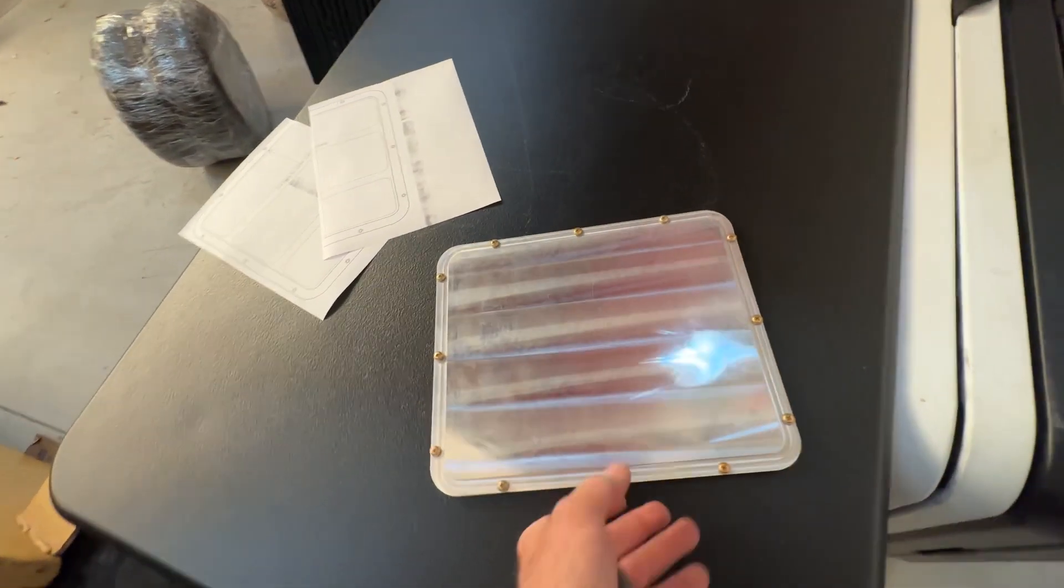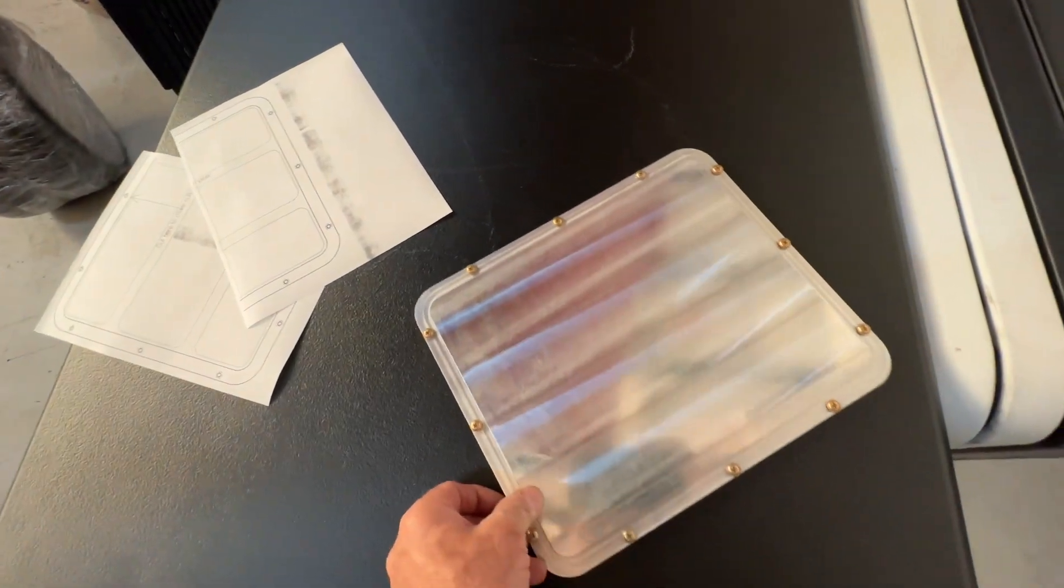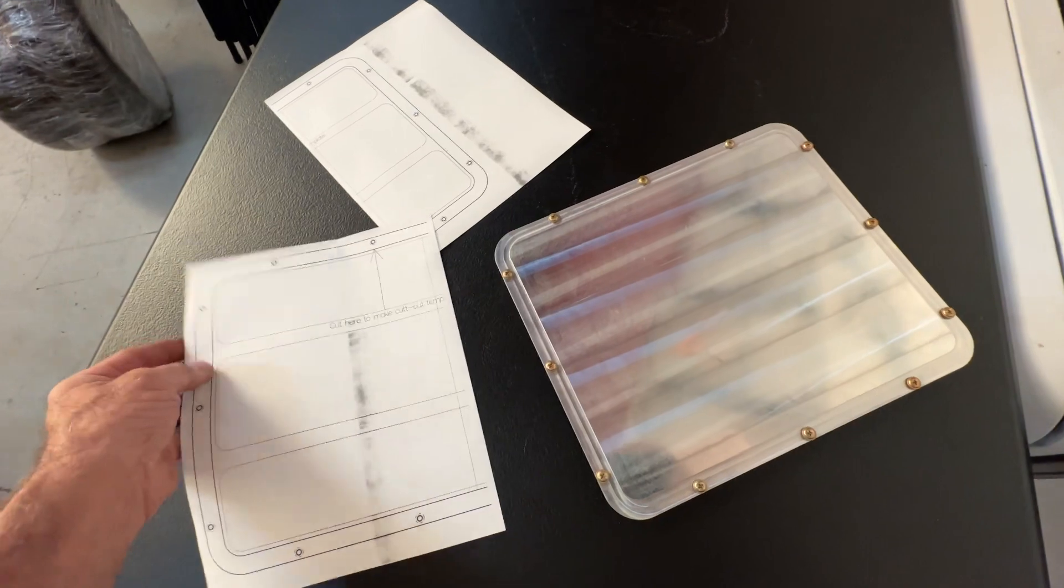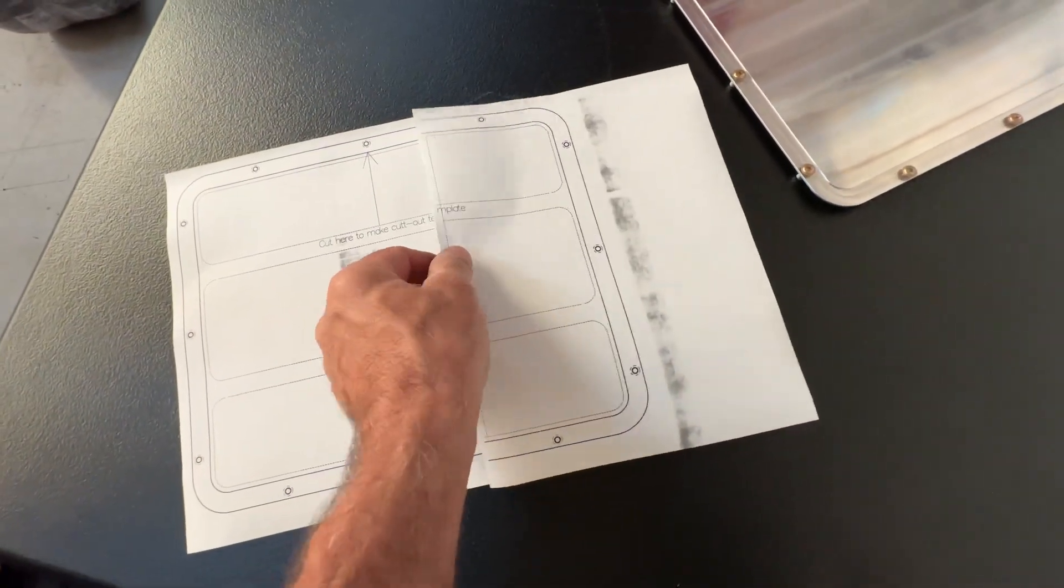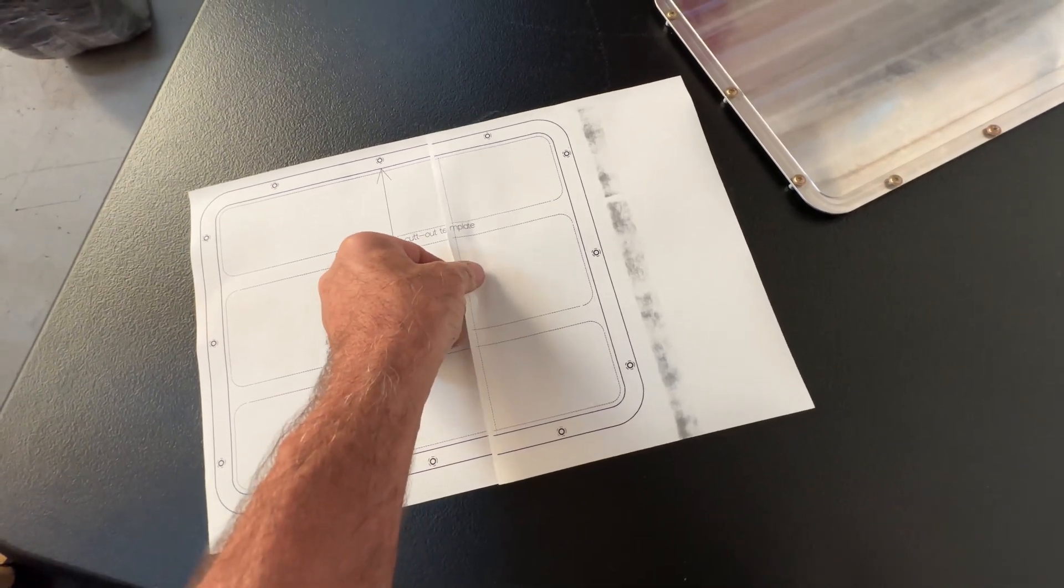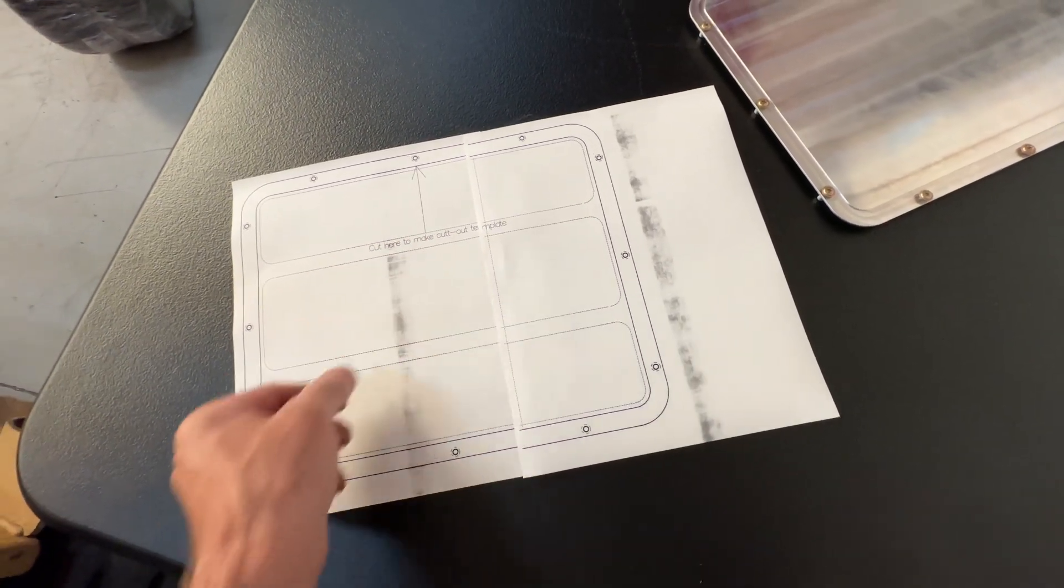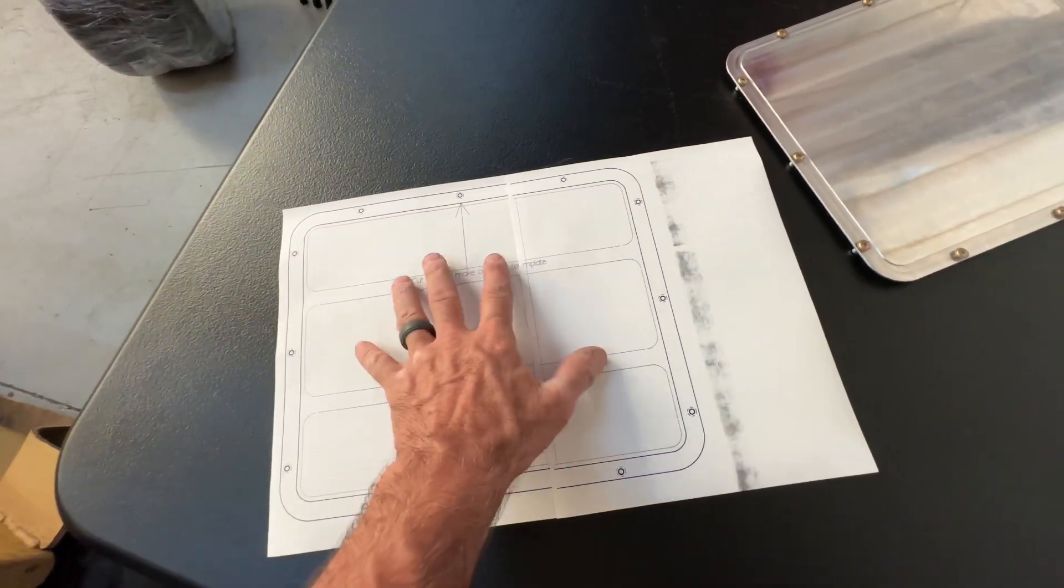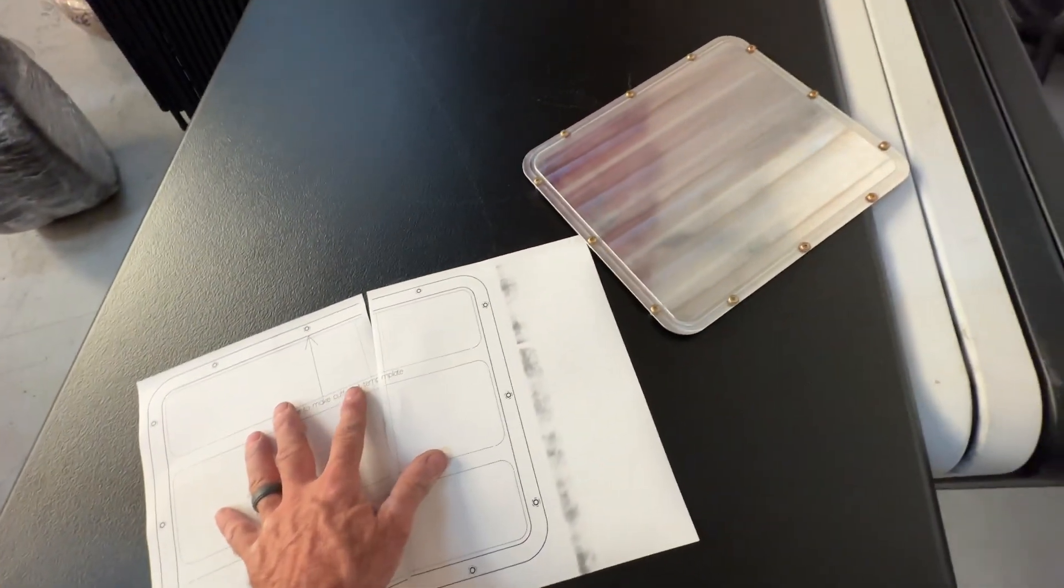In order to cut the actual hole in the airplane, you can use the supplied template. You just put that down, line up the cut lines, glue that together - it didn't fit on one sheet of paper - and then cut along the inner line, and that'll give you the actual hole that you have to put into the airplane.